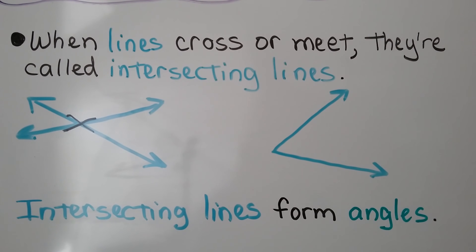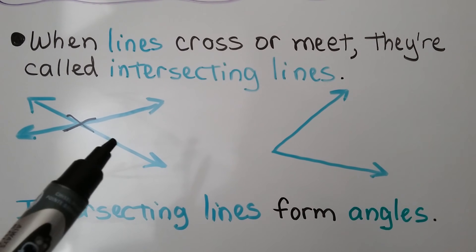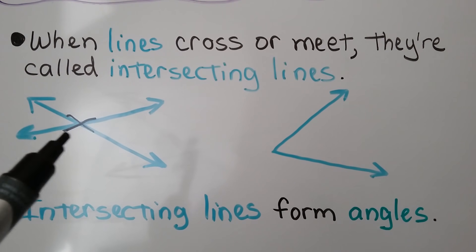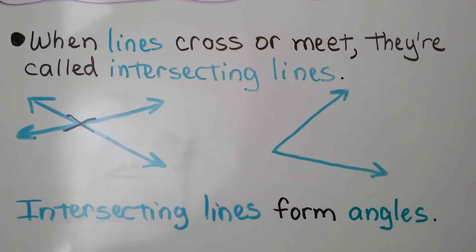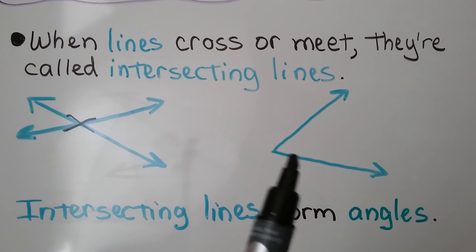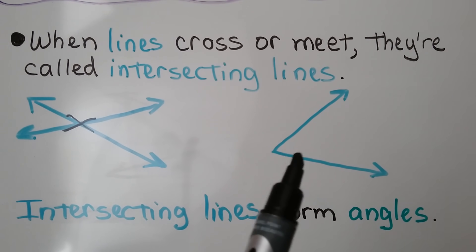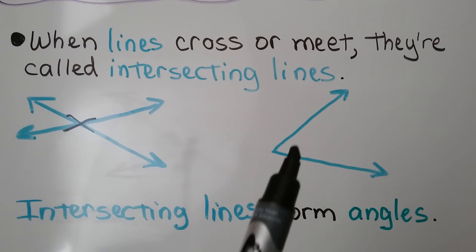When lines cross or meet, they're called intersecting lines. This line intersects this line and it makes an X. And intersecting lines form angles. These two intersect and form an angle right here.